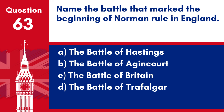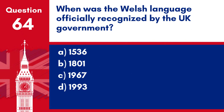Answer: a. The Battle of Hastings. The Battle of Hastings in 1066 saw the defeat of King Harold II by William the Conqueror, leading to the start of Norman rule in England.